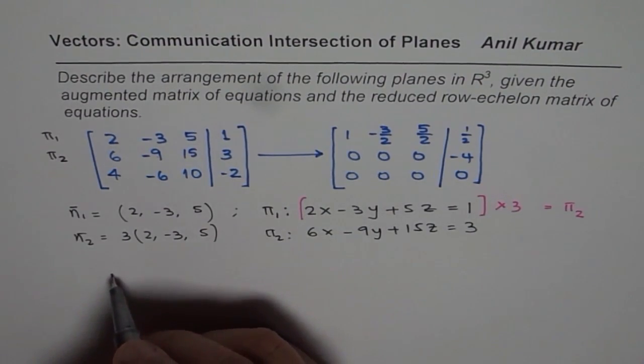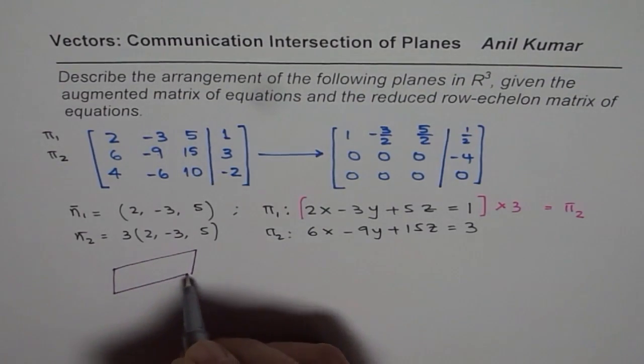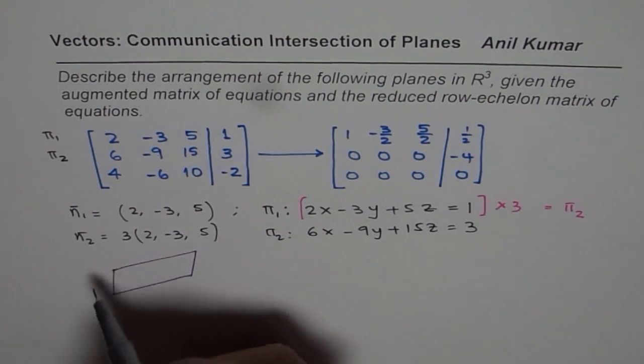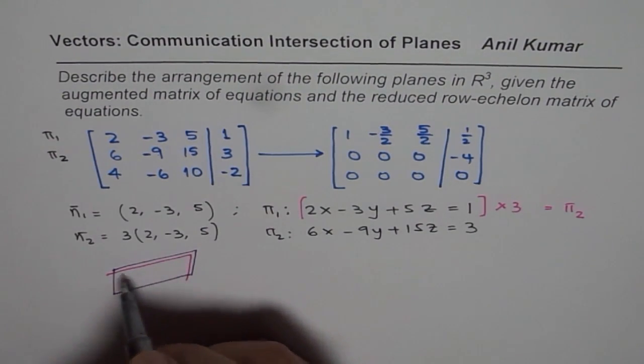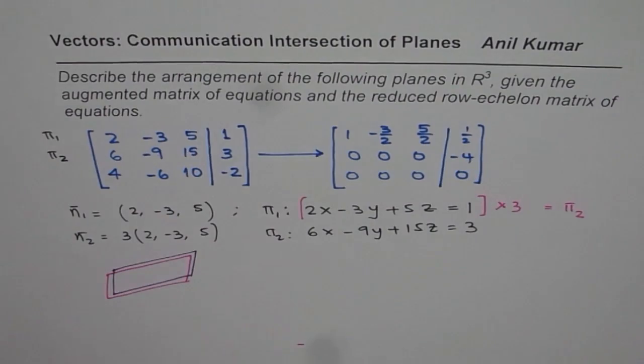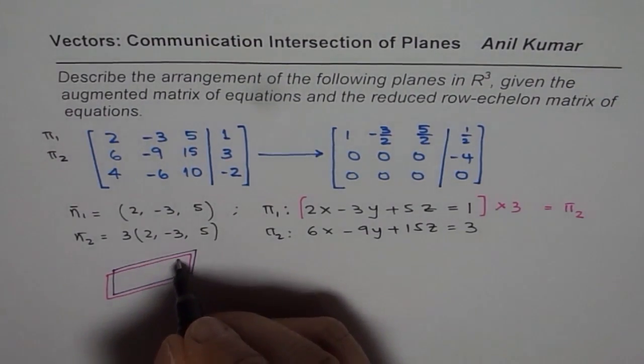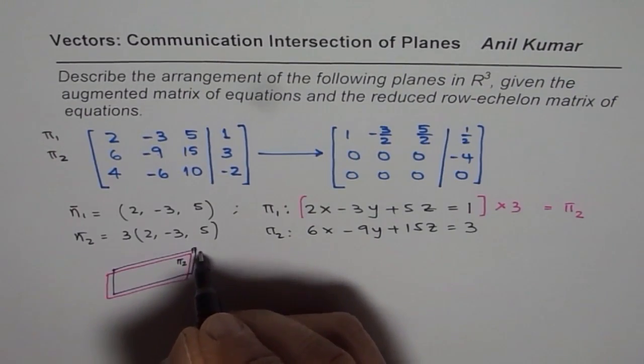So we could kind of sketch these planes as let us say this is π1 for us and π2 is just overlapping. So it is overlapping. So that is how these two planes are. So we will say these two are overlapping planes π2 and this is π1 for us.